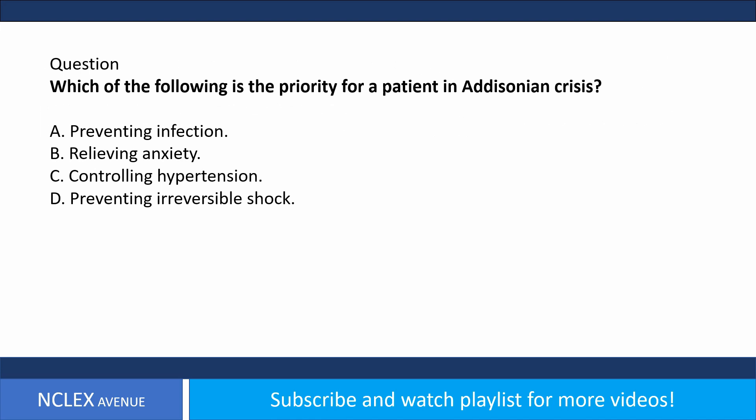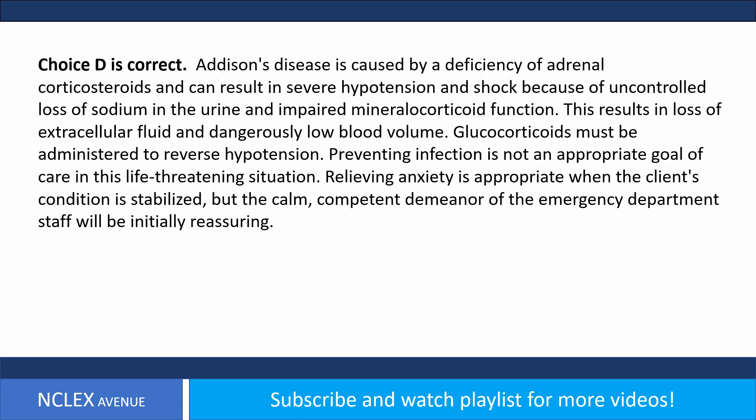Explanation: Adrenal crisis can occur with physical stress such as surgery, dental work, infection, flu, trauma, and pregnancy. In these situations, glucocorticoid and mineralocorticoid dosages are increased. Weight loss, not gain, occurs with adrenal insufficiency. Psychological stress has less effect on corticosteroid need than physical stress. Question: Which of the following is the priority for a patient in an Addisonian crisis?